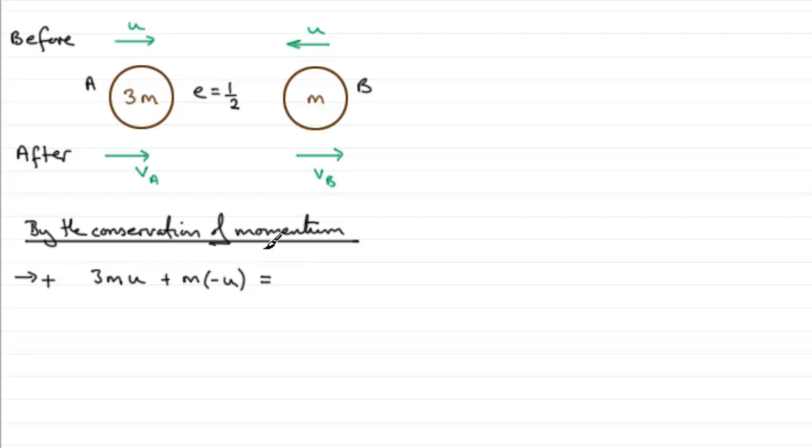That's the initial momentum, the total initial momentum, and it's going to equal the total momentum after impact. Starting with A, you've got 3m times the velocity VA in the positive sense, plus the momentum for B, so it's mass times its velocity VB, which again is in the positive sense.